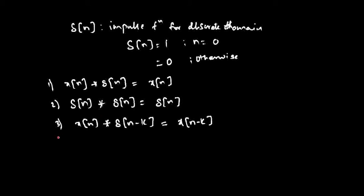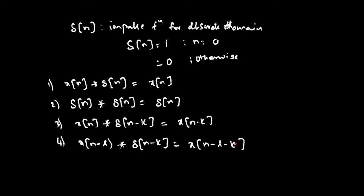If you want to delay the input signal, one way of delaying it is by convolving x of n with delta of n minus k, giving x of n minus k. The delayed input signal convolved with the delayed impulse function results in x of n minus l minus k — the delayed input signal by l plus k units. These properties are similar to the properties we have seen for continuous time.